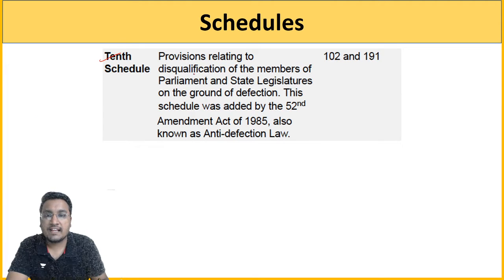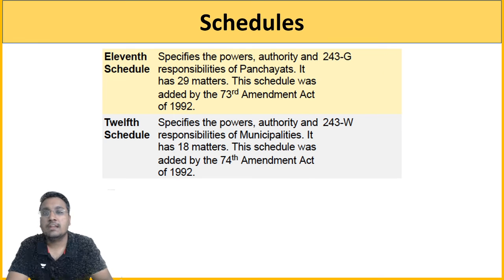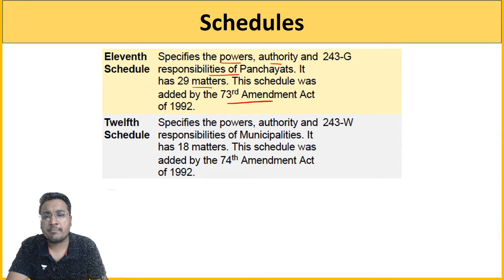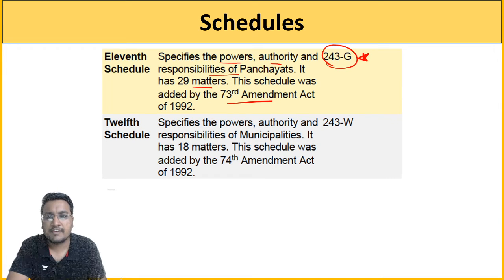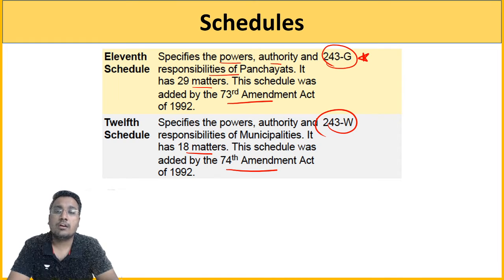The 10th Schedule contains provisions related to disqualification of members of parliament and state legislatures on the ground of defection — if they change party after election. This anti-defection law was added by the 52nd Amendment Act 1985. The 11th Schedule specifies powers and authority of Panchayats, with around 29 matters listed — added by the 73rd Amendment Act 1992, Article 243G. The 12th Schedule contains powers, authority and responsibilities of municipalities, with 18 matters listed — added by the 74th Amendment Act 1992, Article 243W. All 12 schedules — what each contains, which amendment added them, and what provisions they hold — should be thoroughly memorized as at least one question comes from this area.